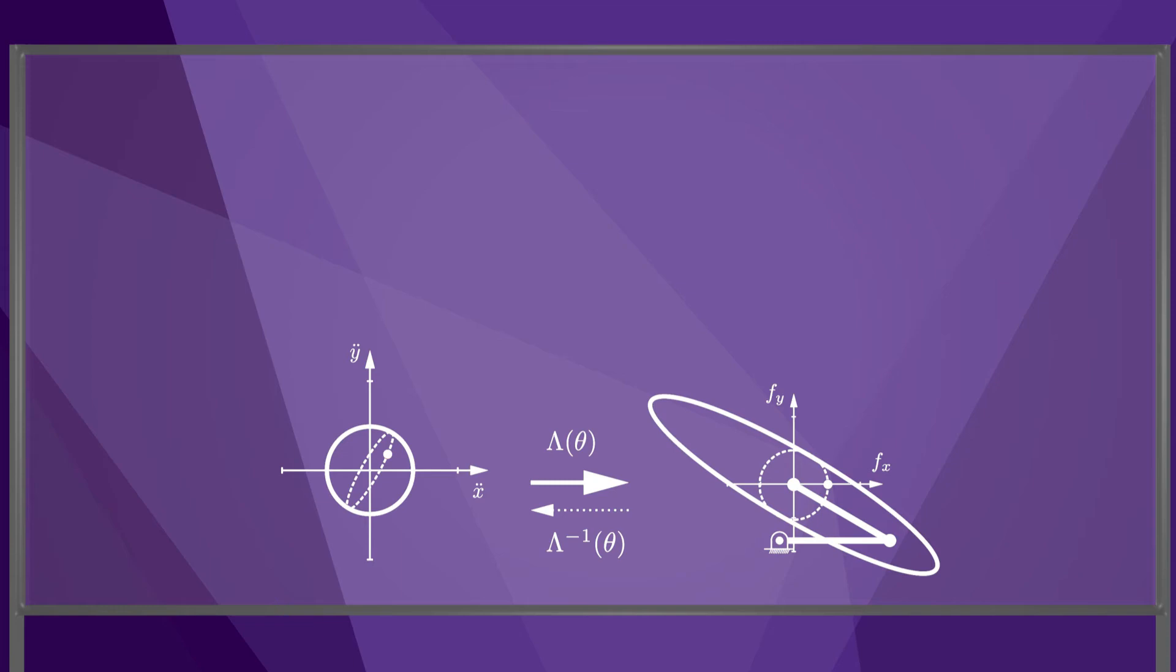So when we move the endpoint of the robot by hand, it does not feel like a point mass, which has a constant mass magnitude and always accelerates in the direction of the applied force. Also, the apparent end effector mass depends on the configuration of the robot, as you see here.